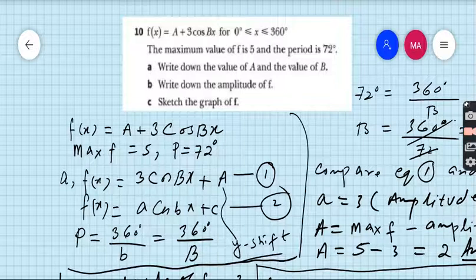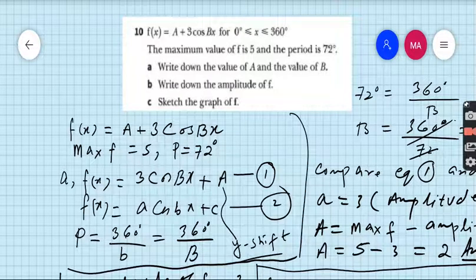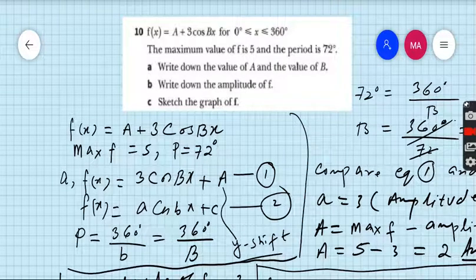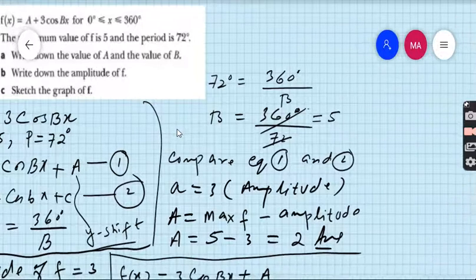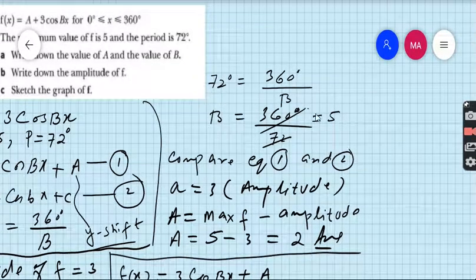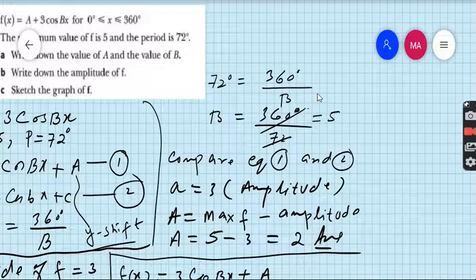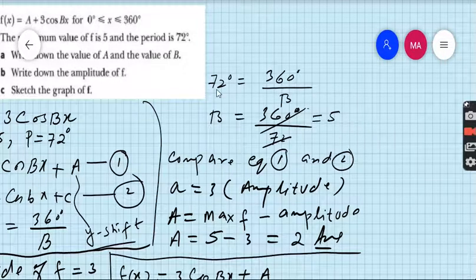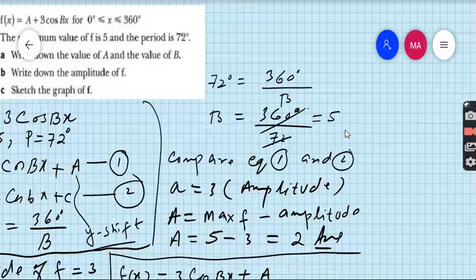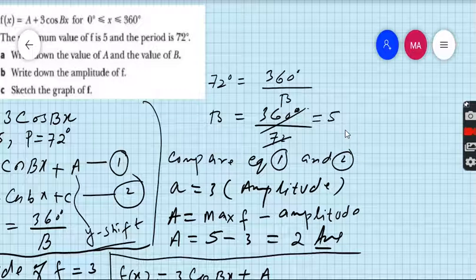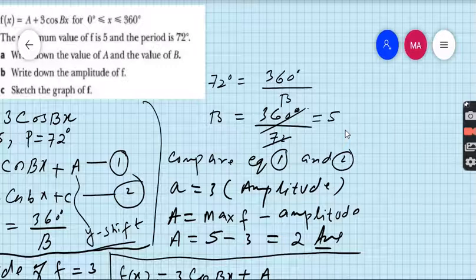Now first write down the formula of the period of cosine. The formula is 360 degrees upon b. Here b is not present but capital B is given. So period equals 360 degrees upon B. Period is given as 72 degrees. So 72 equals 360 upon B. Shift B to the other side: B equals 360 upon 72, which cancels out to give the answer 5. Therefore the value of capital B is 5.